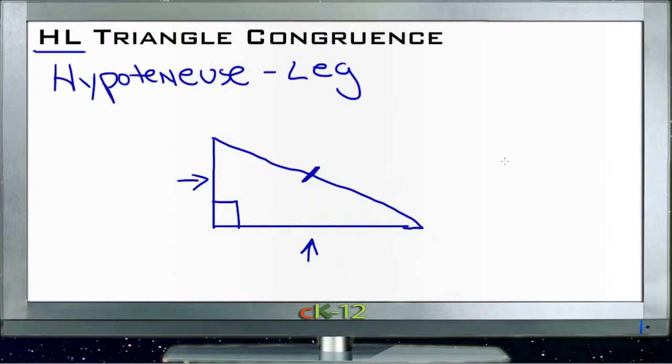Then we can prove that it's congruent with another one just by knowing the same information. So if the other triangle has the same hypotenuse and leg, whichever leg we choose, and it's also a right triangle, then we know that the two triangles are congruent.